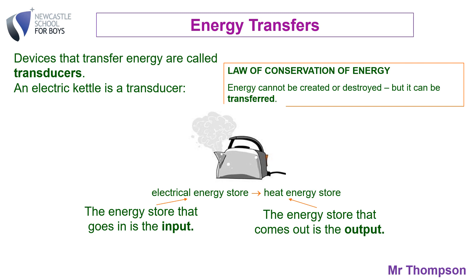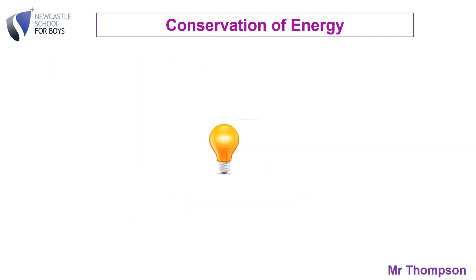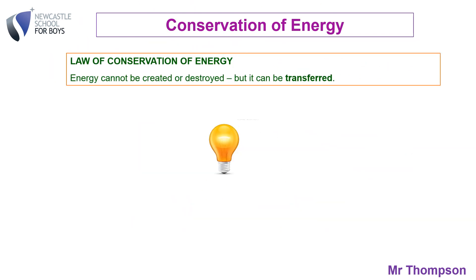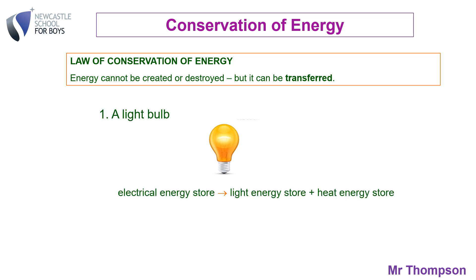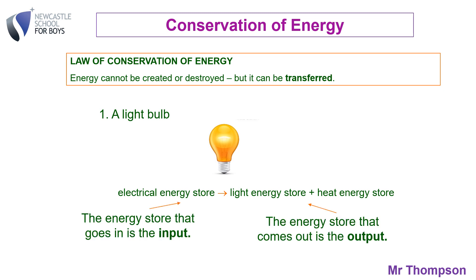The electrical store is called the input and the energy coming out — the heat — is called the output. Quick reminder: energy can't be created or destroyed but can be transferred. So in a light bulb, you put electrical energy in and you get light and heat out. Electrical is the input, and light and heat are the output. The exact amount of energy is turned into light and heat — you don't lose any.